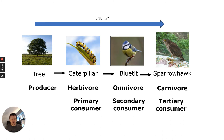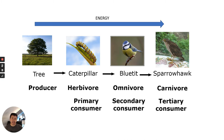In terms of populations, there's obviously one tree but lots of caterpillars; there'll be fewer blue tits than caterpillars and fewer sparrowhawks than blue tits. The reason is that energy is flowing through the ecosystem — not all of the energy is being transferred into the biomass of the next consumer. That's something we'll look at later in terms of how energy is transferred.